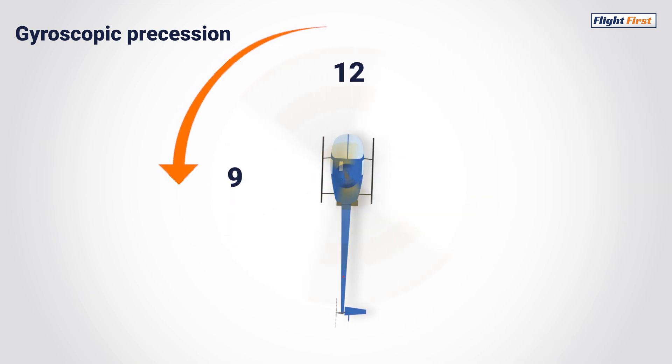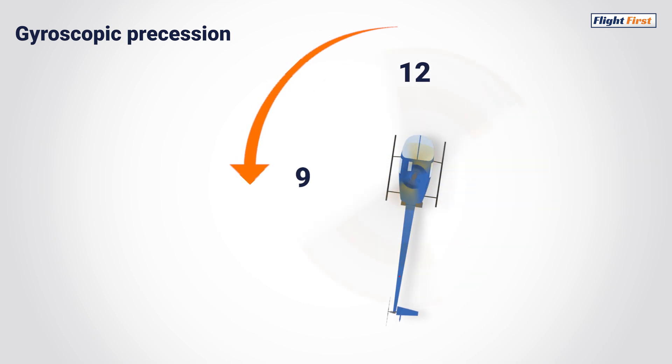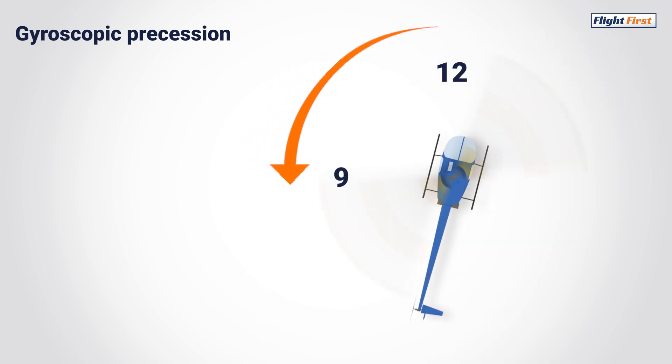This would induce a right roll, as the increase in pitch angle can be considered an increase in angle of attack. But what if we reduce the pitch at, say, the 12 o'clock position? Well, let's take a look.